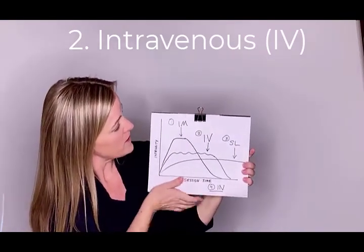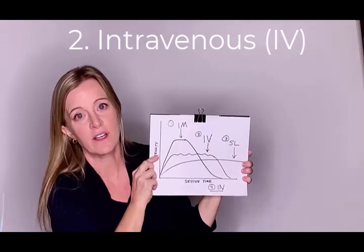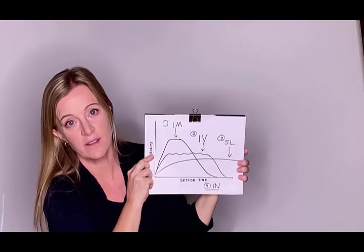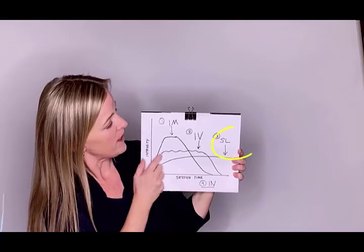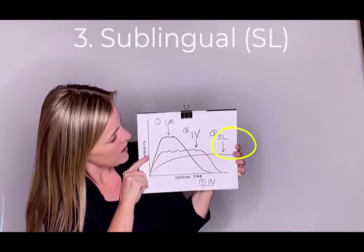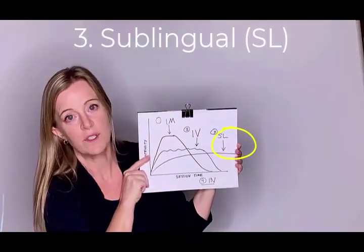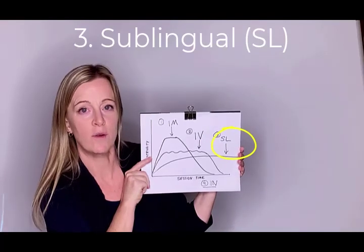We've talked a little bit about advantages or disadvantages of IM versus IV. And then the next one I have here, number three, is another common one called sublingual. You often hear this referred to as a troche or a lozenge.